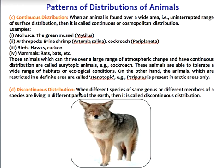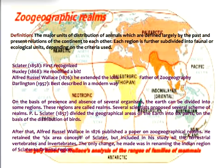Discontinuous distribution occurs when different species of the same group, or different members of a species, are living in different parts of the earth. This is called discontinuous distribution — a kind of clumped distribution on the earth.